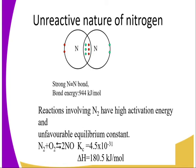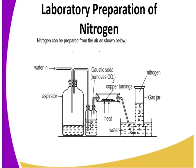Nitrogen can be obtained in the laboratory through a process referred to as isolation from the air or atmosphere. Air can be isolated using the setup shown in the diagram. Water is fed into an aspirator, and the water in the aspirator dispenses air out and pumps it through caustic soda or sodium hydroxide, which removes carbon dioxide.